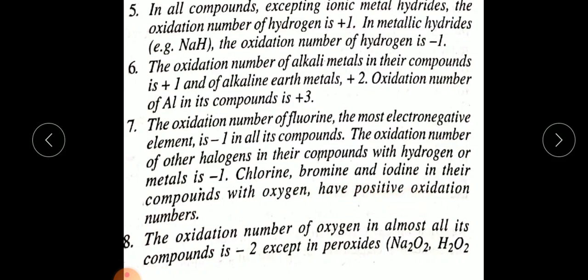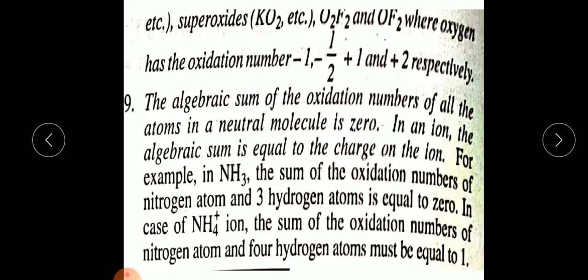Rule 8: The oxidation number of oxygen in almost all its compounds is minus two. Exceptions include peroxides such as Na₂O₂ and H₂O₂, where it is minus one — because sodium is plus one, two sodiums give plus two, so each oxygen is minus one. In superoxides like KO₂, and in OF₂ and O₂F₂, oxygen has oxidation numbers of minus one-half, plus one, and plus two respectively.